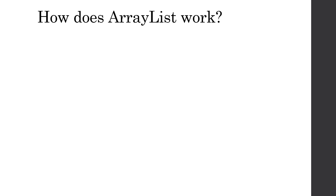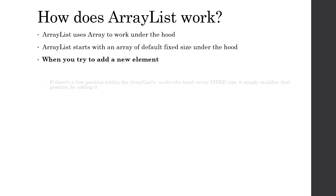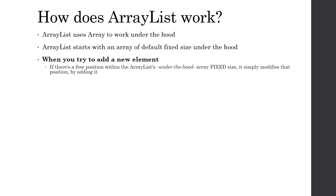To recap in more detail: ArrayList uses an array under the hood and starts with a default fixed size. When adding a new element, if there is a free position within the array, it simply modifies that position by storing the new element there.